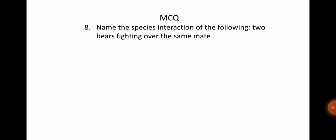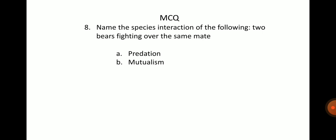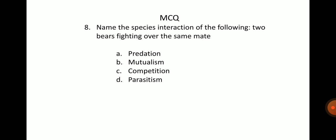Name the species interaction of the following: two bears fighting over the same mate. Options: A. Predation, B. Mutualism, C. Competition, D. Parasitism. The answer is option C, which is competition.